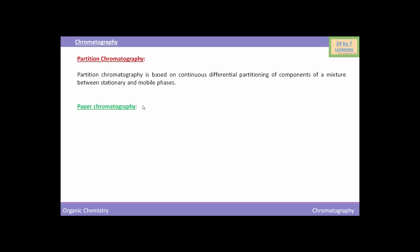Now we will see the paper chromatography, which is a type of partition chromatography. In paper chromatography, a special quality paper known as chromatography paper is used. Chromatography paper contains water trapped in it which acts as the stationary phase.